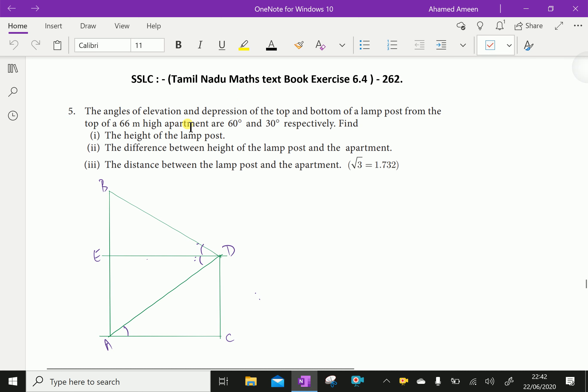The angles of elevation and depression of the top and bottom of a lamp post from the top of a 66 meter high apartment are 60 degrees and 30 degrees respectively. Find the height of the lamp post, the difference between height of the lamp post and the apartment, and the distance between the lamp post and the apartment.